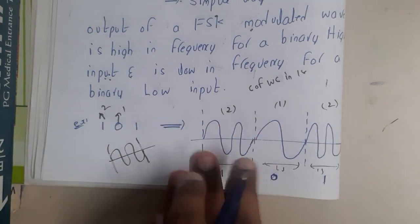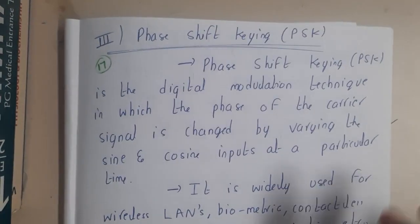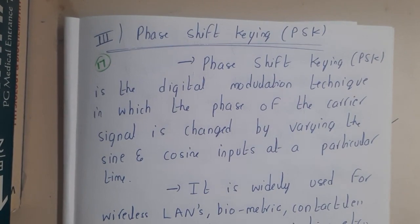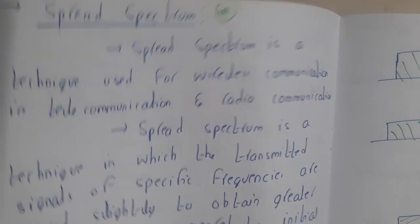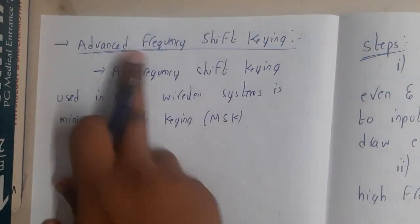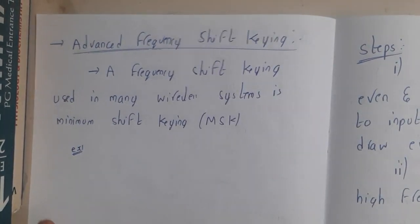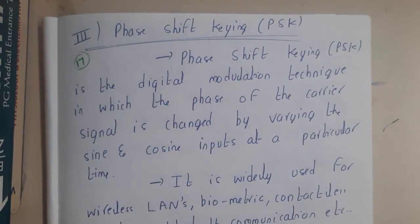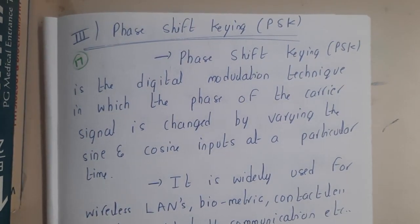The output of FSK modulation is high if the frequency of the binary value is high, and low if the binary value is low. I hope everyone got a basic idea about it. In the next lecture we'll be discussing Phase Shift Keying as well as an advanced method — advanced Frequency Shift Keying. We'll be discussing both in detail. Let us meet in the next lecture. Thank you for watching.